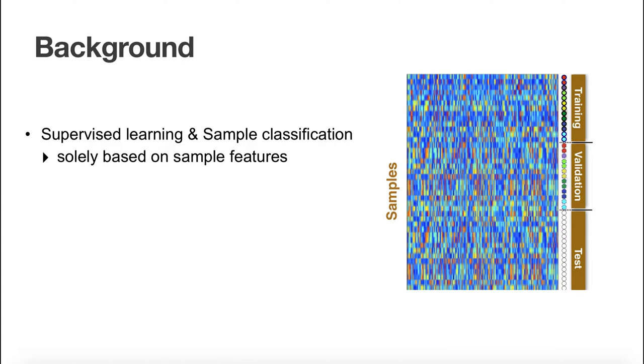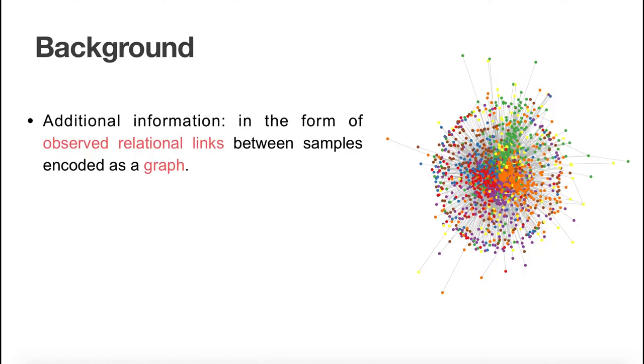However, this paradigm is recently evolving to include additional sources of information. In some instances, datasets contain additional information in the form of observed relational links between samples. Graphs are a natural way to represent such relational links. For example, in a dataset of scientific articles, each article will be described by features that encode its text, but we might also have information on citations between articles.